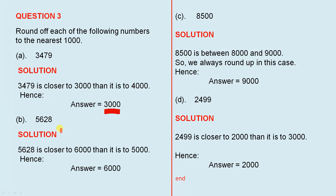5,628. The solution: 5,628 is closer to 6000 than it is to 5000, so it is rounded off to 6000.